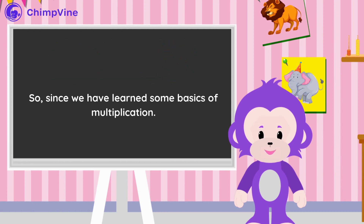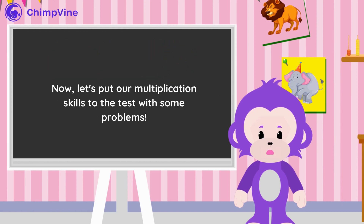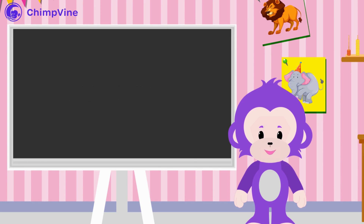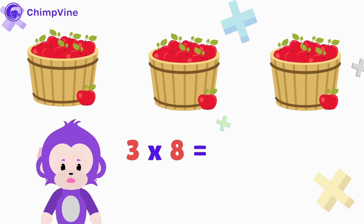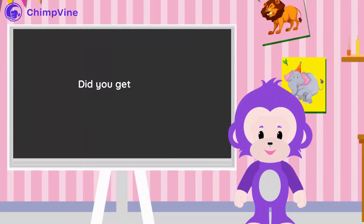Now that we've learned some basics of multiplication, let's put our multiplication skills to the test with some problems. Ready? Here we go. If Sally has three baskets and each basket has eight apples, how many apples does she have in total? Got your answer? Let's check it. Since Sally has three baskets we have three, and there are eight apples in each basket so we have eight. This gives us the equation: three baskets times eight apples, which equals 24 apples. So Sally has 24 apples. Did you get it right?